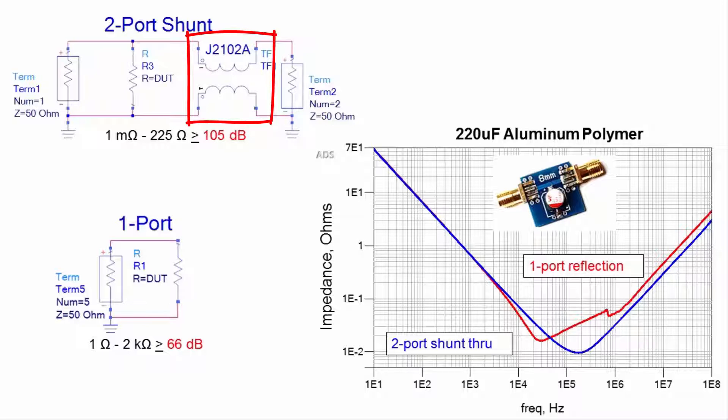The two-port shunt through measurement range extends from below one milliohm to as high as 1000 ohms, but for best fidelity the maximum impedance should be limited to 225 ohms, but later I'll show you how to overcome this limitation.